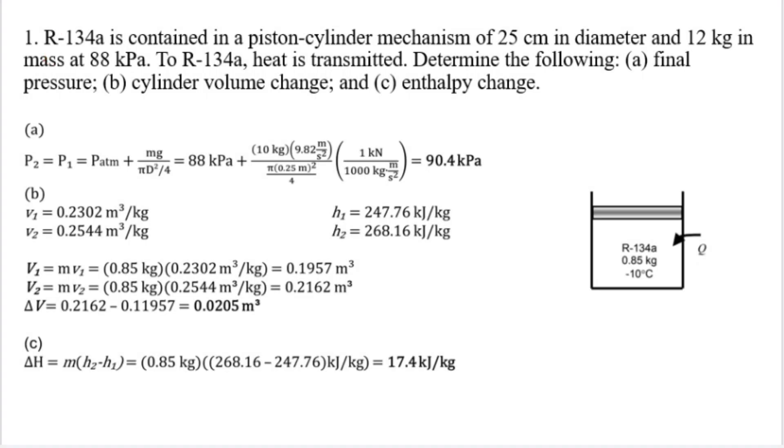Hello everyone, this is the first question or the first problem in chapter 4. R-134a, it means the property table, is contained in a piston-cylinder mechanism of 25 cm in diameter and 12 kg in mass at 88 kPa. To R-134a, heat is transmitted.